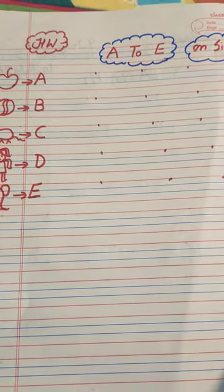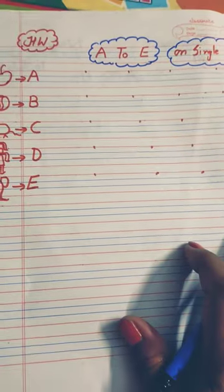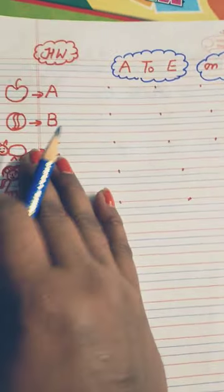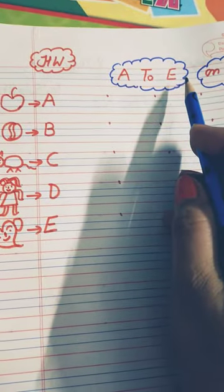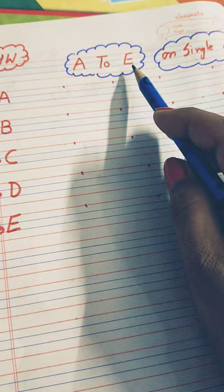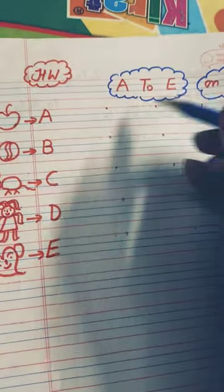Good morning everyone. How are you? Fine? Okay. Let's start our English work. Today we will do A to E alphabet on single dot. How do we do it?